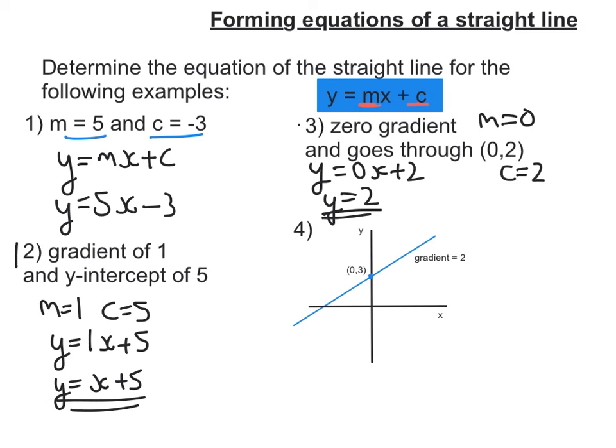So last example here, we now actually have a graph where it's told us the gradient is 2 and we've got the y-intercept of 0, 3. So the gradient's 2, so that means m equals 2. And it goes through the point 0, 3, so c is 3.